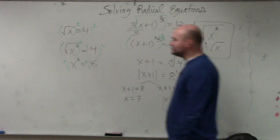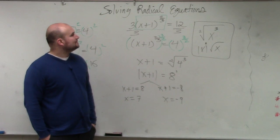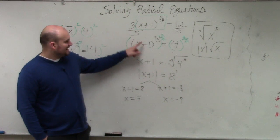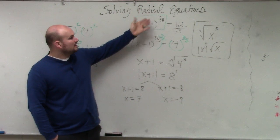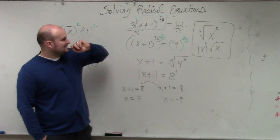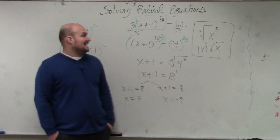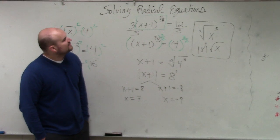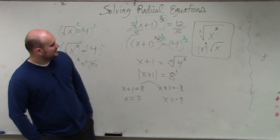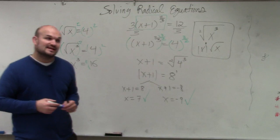Now we just go ahead and check our answers. Plug in 7: 7 plus 1 is 8, and that's going to be the cube root of 8 squared. 8 squared is 64. The cube root of that is 4. 4 times 3 is 12. 12 equals 12. Now negative 9: negative 9 plus 1 is negative 8. You're squaring and then taking the cube root. Negative 8 squared is 64, cube root of 64 is 4, times 3 is 12. So both of these answers work. We have two answers.